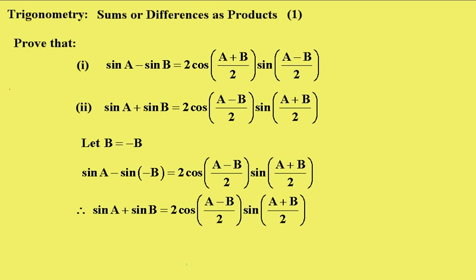Now the second one is quite straightforward. We simply let B equal minus B in the first one. So we replace that B here with a minus B and replace that with a minus B which makes it minus B there. Because that one changes that to a plus B there. And of course we know that the sin of minus B is minus the sin of B. So that changes that sin to a plus and we get the desired result.